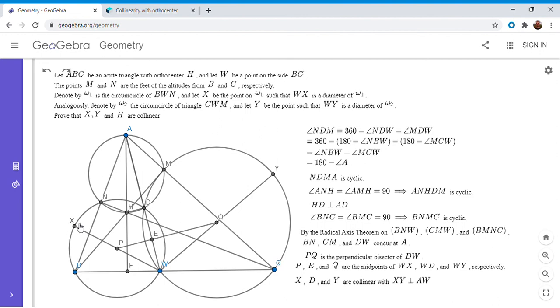But if we know that's true, we also know from earlier that HD is perpendicular to AW. So if that's true, that HD is perpendicular to AW, then HD has to lie on that line XDY. And so all four points - X, H, D, and Y - are collinear. That solves the problem.